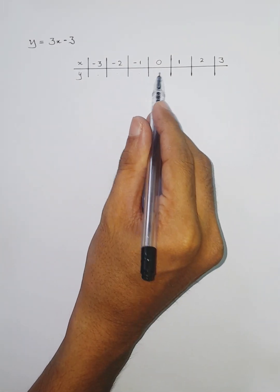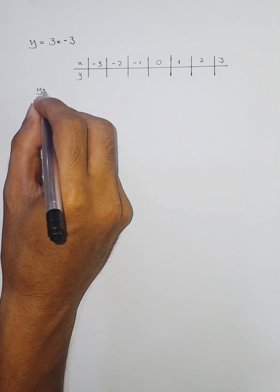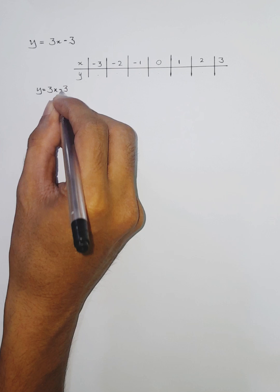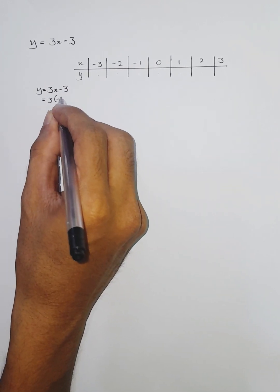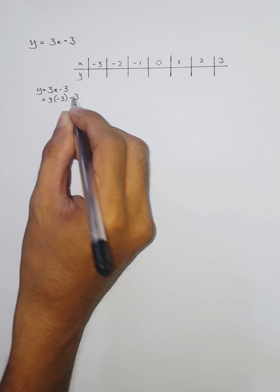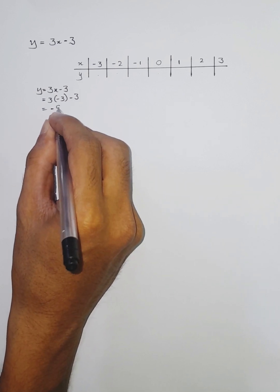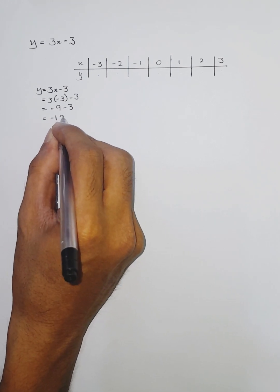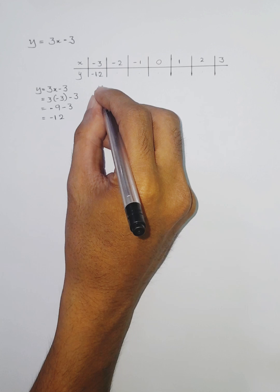We have to fill each and every single one of these cells. So y = 3x - 3. We'll see for x = -4, 3 times -4 is -12, minus 3, so it's -12 here. And the next one.